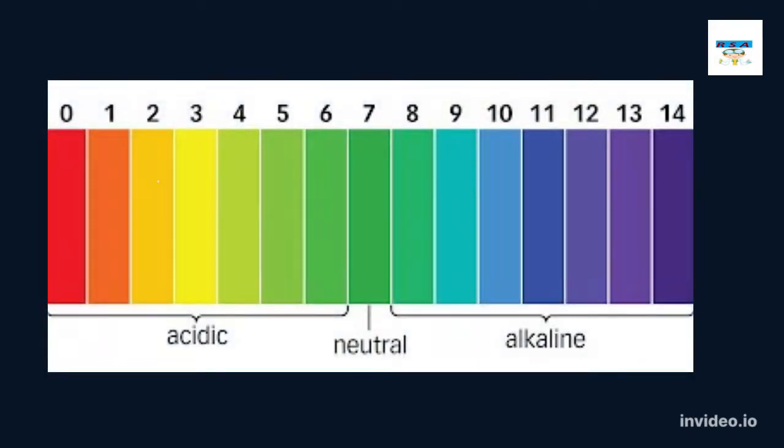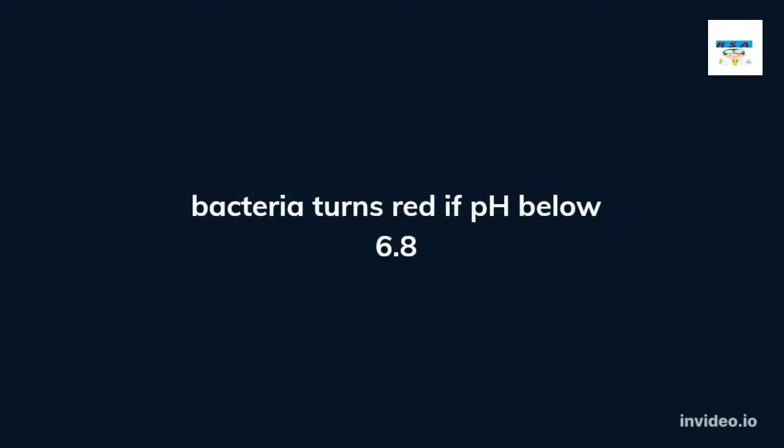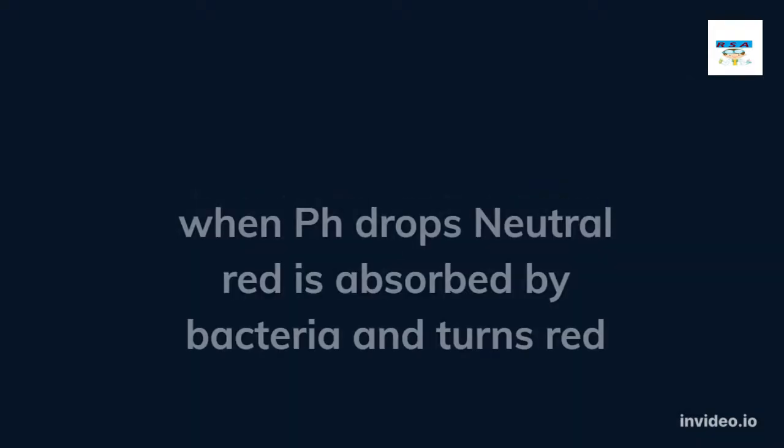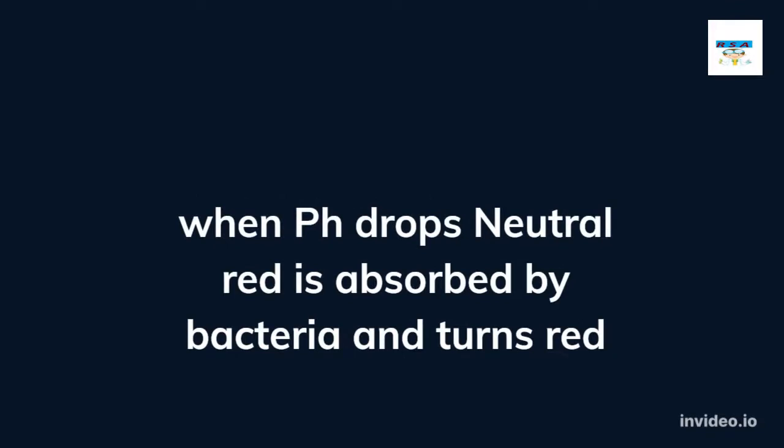Bacteria which ferment lactose decrease the pH of the medium, and this decrease is detected by neutral red. When the pH drops, the neutral red is absorbed by the bacteria, which appear as bright pink to red colonies on the agar.